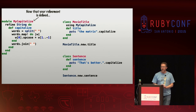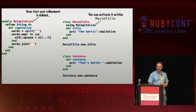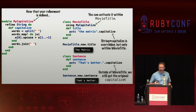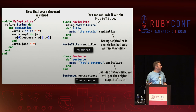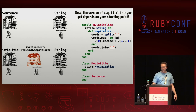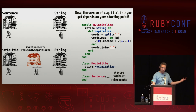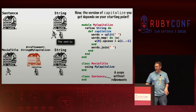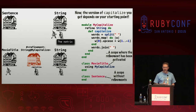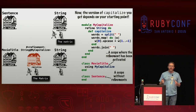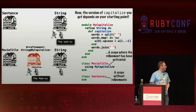Now that your refinement is defined, you can activate it within the movie title class. That'll override the capitalize method, but only within movie title. Outside of movie title, in lexical scopes where the refinement hasn't been explicitly activated, you still get the original version of capitalize, and only the first letter of the string gets capitalized. In a scope where refinements haven't been activated, it proceeds to capitalize on the string class — the original version. But in a lexical scope where the refinement has been activated, it prepends the refinement module to the string class, and that's the version Ruby encounters first, capitalizing each word.